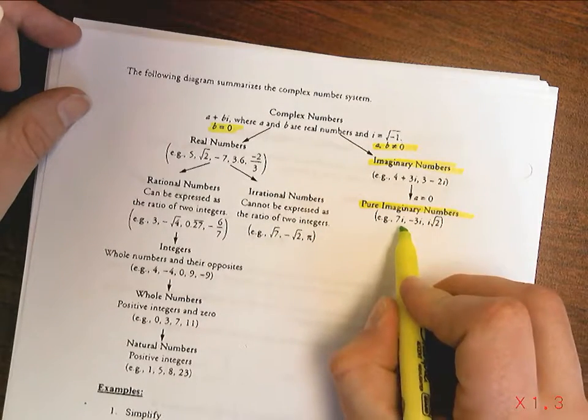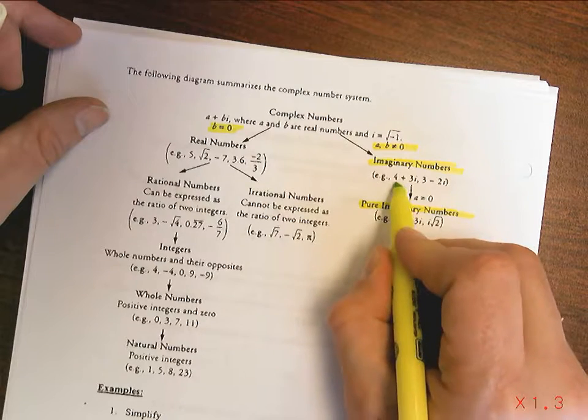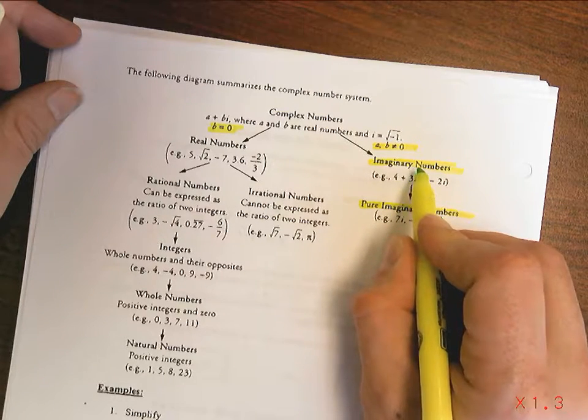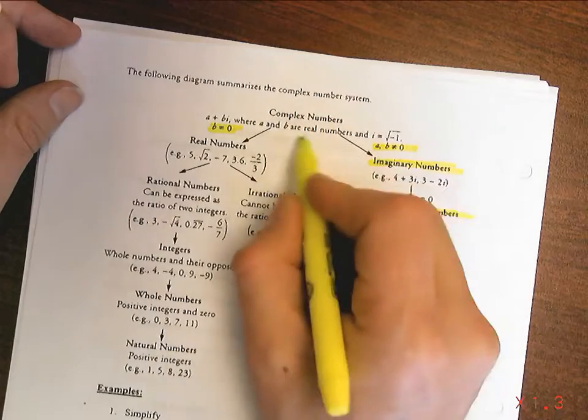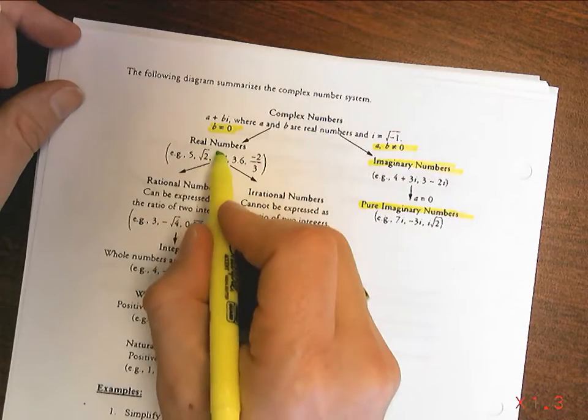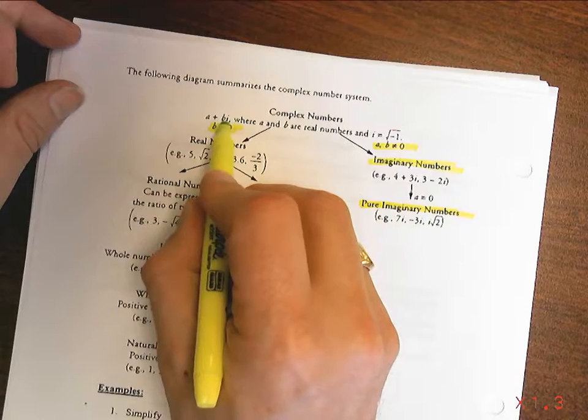So that would be like 7i. But if I have 4 plus 3i, then that's an imaginary number. And imaginary numbers are part of the complex numbers. Real numbers are also part of the complex numbers, where the b equals zero.